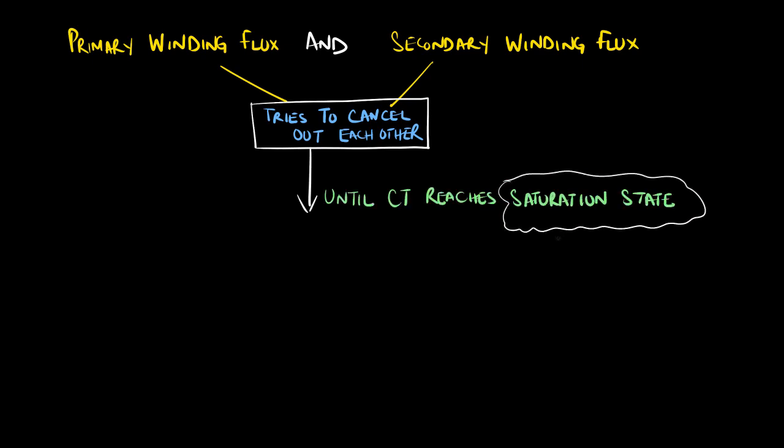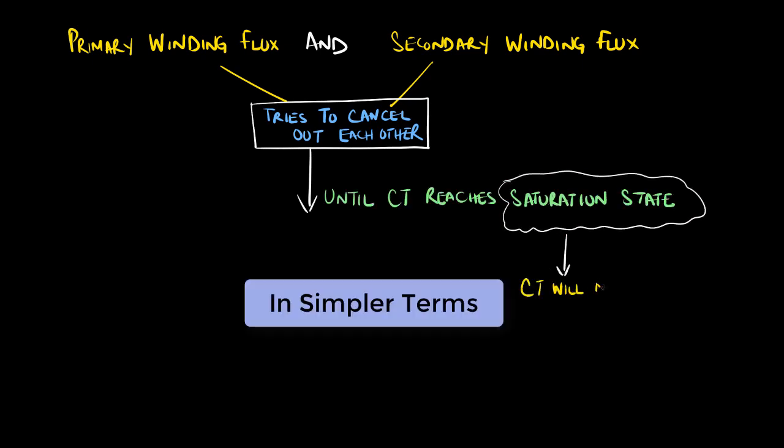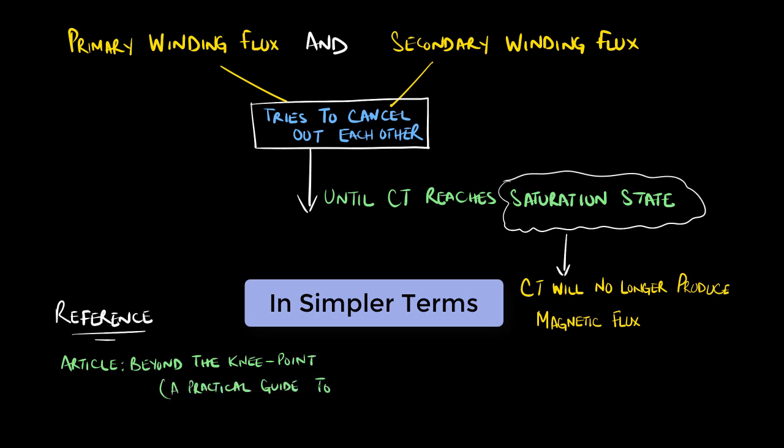To put it in more simple terms, the CT can no longer produce magnetic flux to account for the increase in the primary current IP. A reference to the content can be found in the article Beyond the Knee Point, a practical guide to CT saturation by Schweitzer Engineering Laboratories.